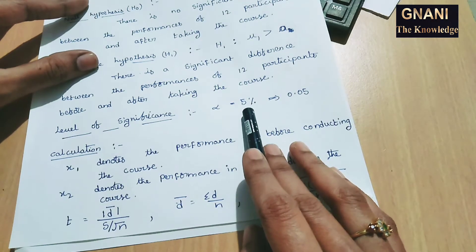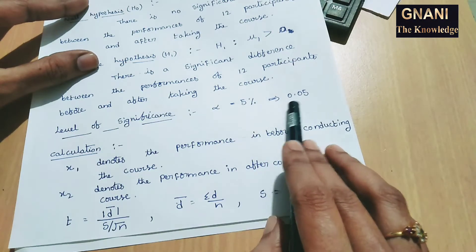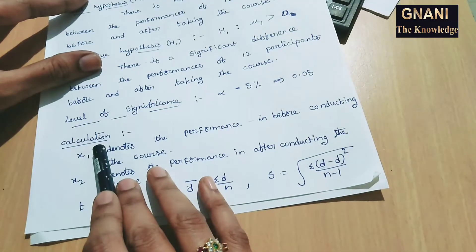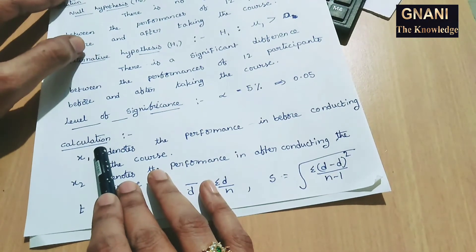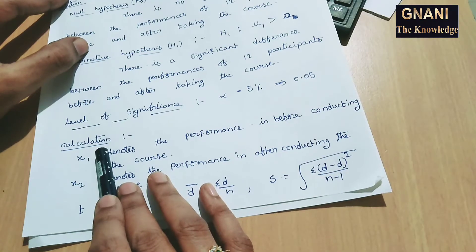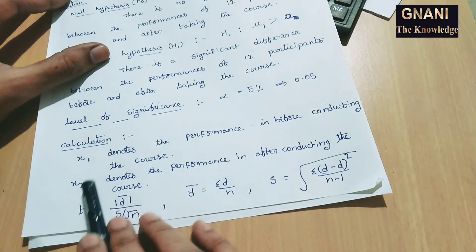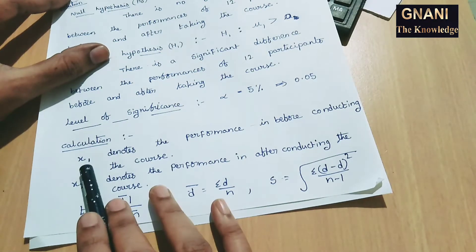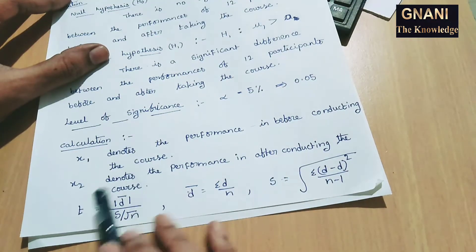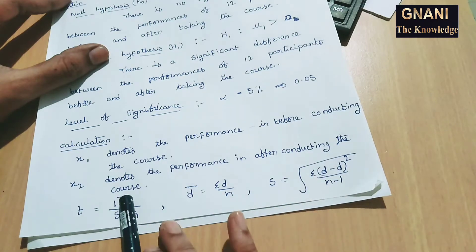We will take 5% for the problem. So here alpha equal to 5%, which means 0.05. The fourth step is calculation. We have before course marks denoted by x1 and after course marks denoted by x2. x1 denotes performance before conducting the course, and x2 denotes performance after conducting the course.